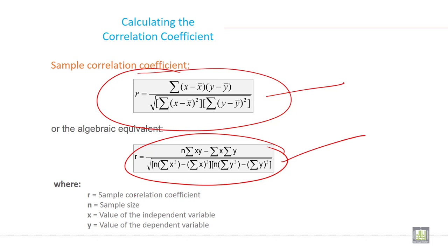Where r is sample correlation coefficient, n is equal to sample size, x is value of independent variable and y is value of dependent variable.